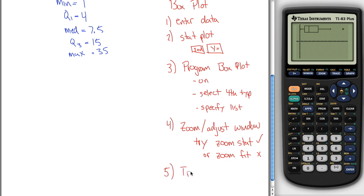you can trace to see features. And what I mean by trace, you hit this trace key right here, and it'll tell you things like our median is equal to 7.5. Nice. It'll tell us that our first quartile is equal to 4. So it kind of confirms a lot of these things off of our box plot. Our minimum value is equal to 1.